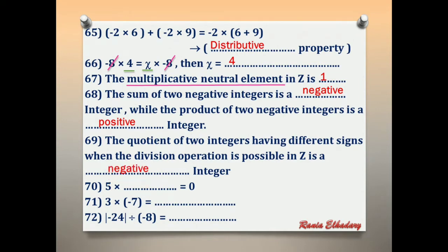Number 70: 75 × blank = 0. Any number multiplied by zero gives zero. So the number in the space is 0.